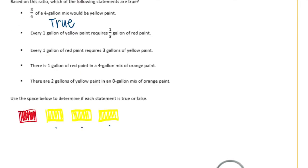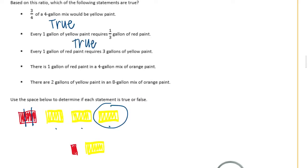For every 1 gallon of yellow paint, it requires 1/3 of red paint. So we split red 1 into thirds, and we would only have 1/3 of the red paint. So that one is also true. Every 1 gallon of red paint requires 3 gallons of yellow paint — 1, 2, 3 gallons of yellow. So that is true.